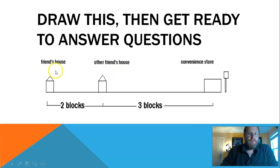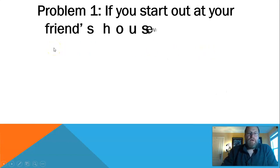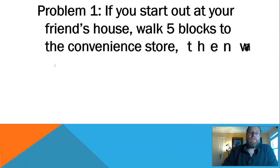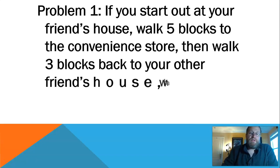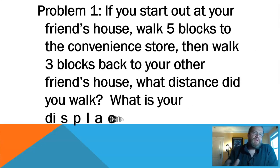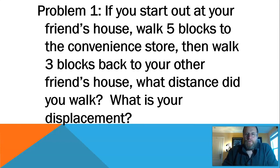Alright, here we go. You've got your friend's house here, two blocks away to your other friend's house, three blocks away to the convenience store. Let's read the problems. Problem one: If you start out at your friend's house, walk five blocks to the convenience store, then walk three blocks back to your other friend's house, what distance did you walk? And what is your displacement? Pause me again, figure those two questions out, give me two answers. You don't have to write the problem. Just give me the answers. When you come back, I'll tell you the answers.